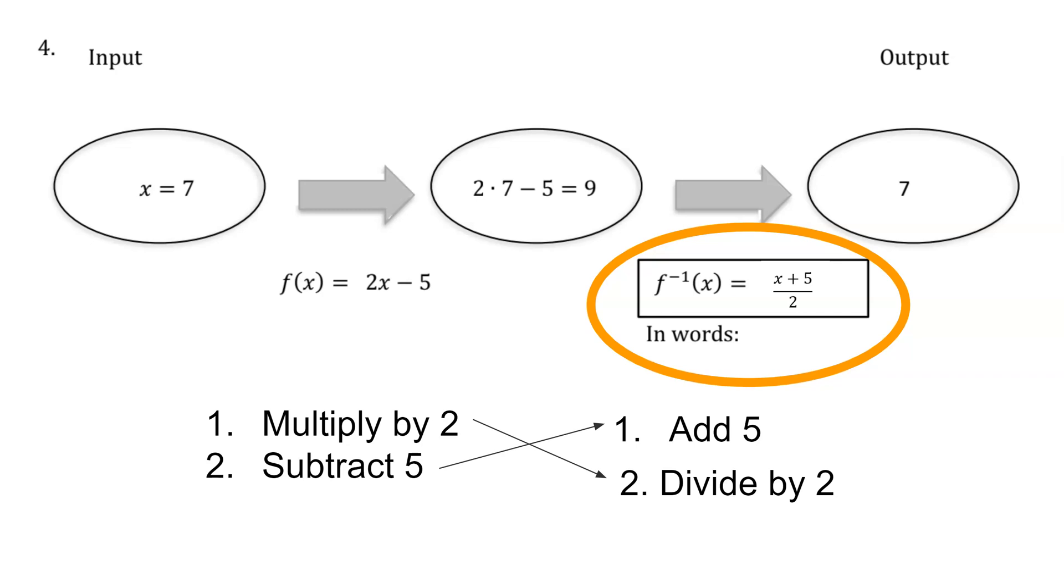Now let's test it out. We substituted x equals 7 into f(x) and got 9. If we substitute 9 into this function, 9 plus 5 is 14, and 14 divided by 2 is indeed 7. We got back out what we started with, which should be the case when I'm substituting into a function and then into its inverse. That's one way to check and make sure that my inverse function is accurate.